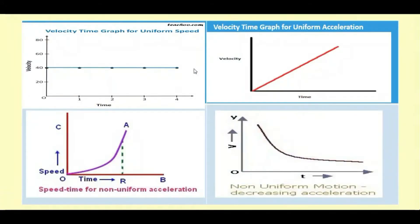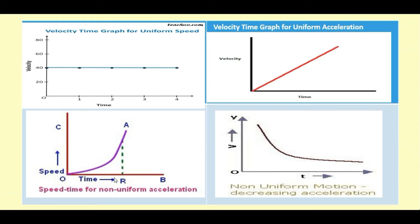In a velocity-time graph for uniform motion, velocity is not changing but time is, so the graph shows a straight line parallel to the x-axis. For uniform acceleration, velocity changes at equal intervals of time — velocity increases and time increases — so it shows a straight line going upward, indicating uniform acceleration.